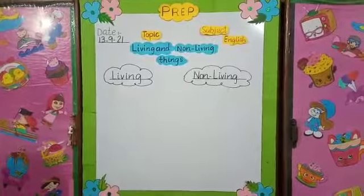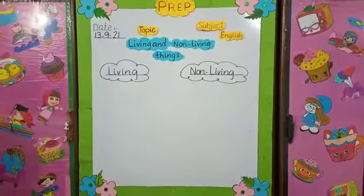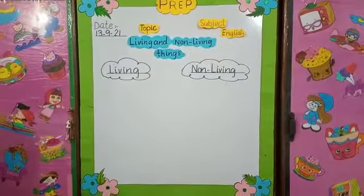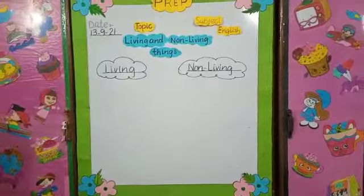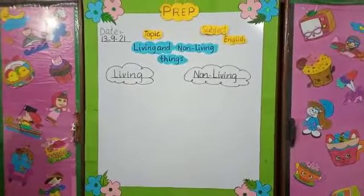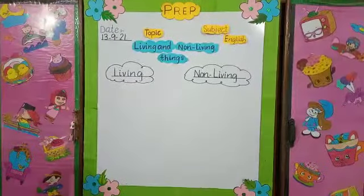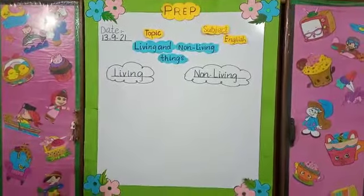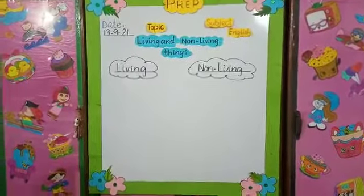I have two columns here. You have to tell me which are living things and which are non-living things, and we will paste them in the correct column. If you don't want to paste, you can draw the picture yourself.